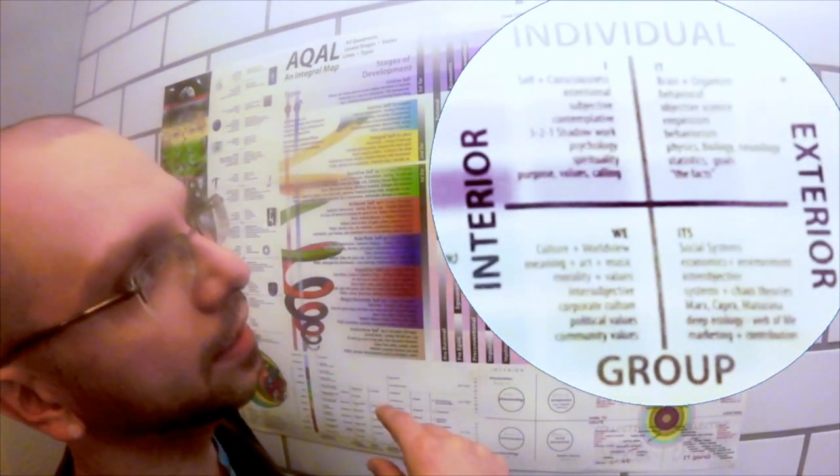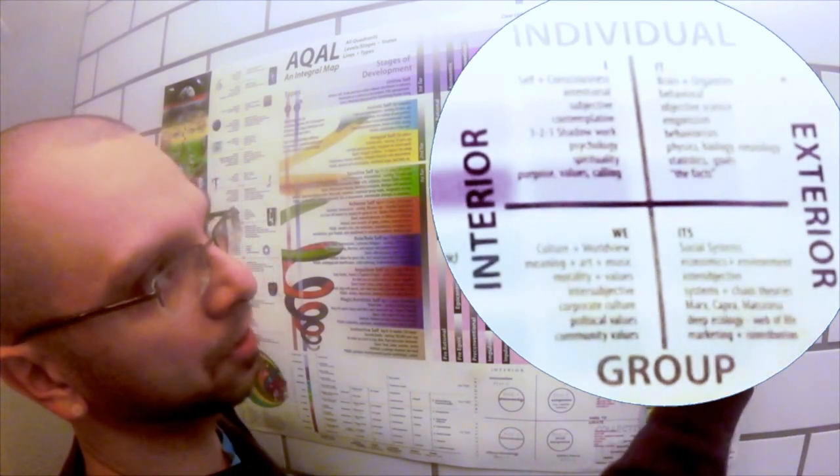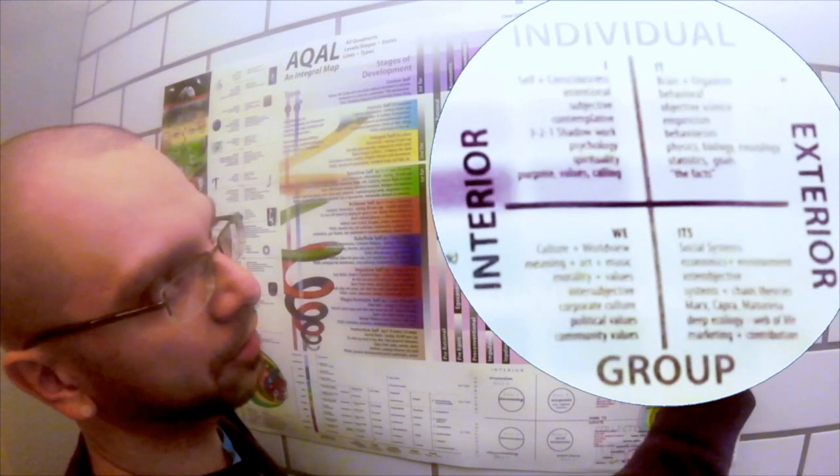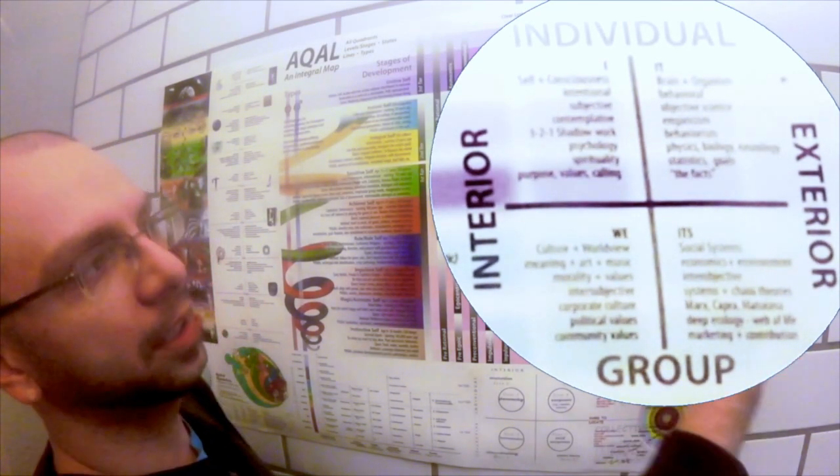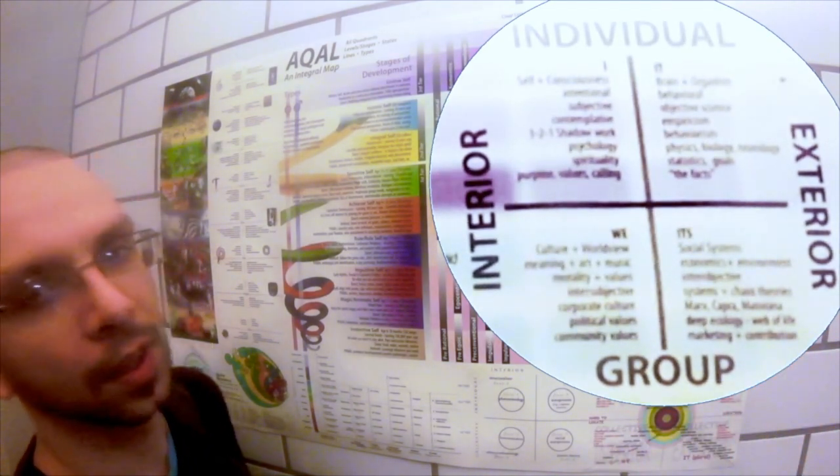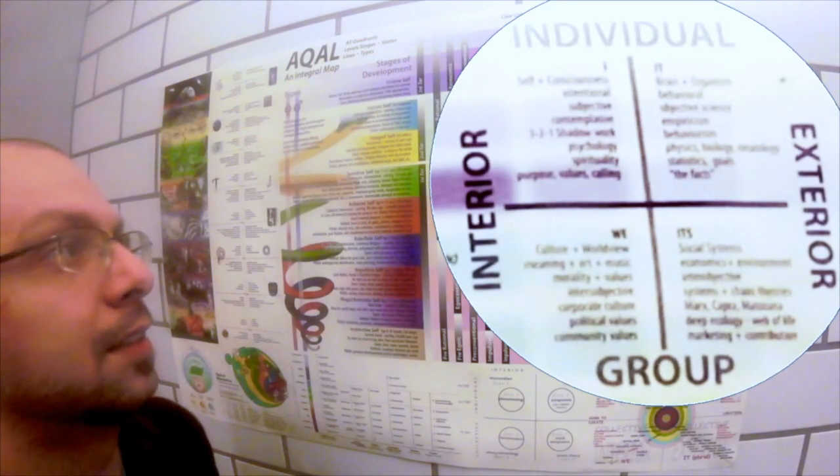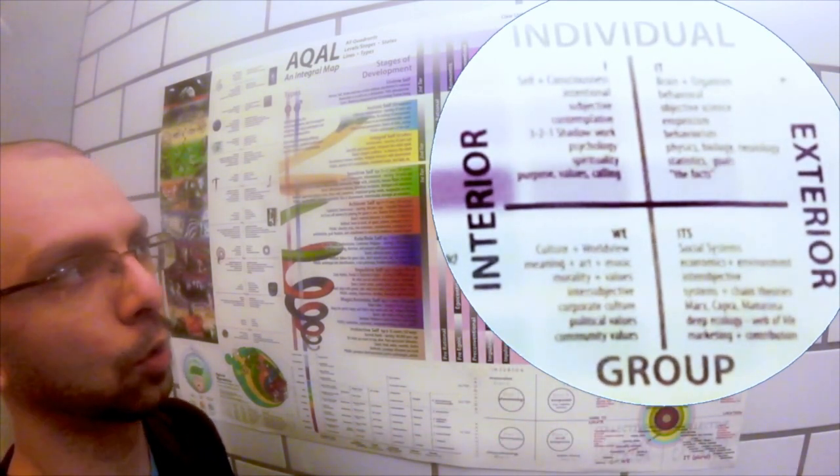Its plural is something like systems, social systems, economic, environmental, inter-objective systems, chaos theory, political systems, deep ecology, the web of life. So that's a good example of it and its, the objective world that we live in.